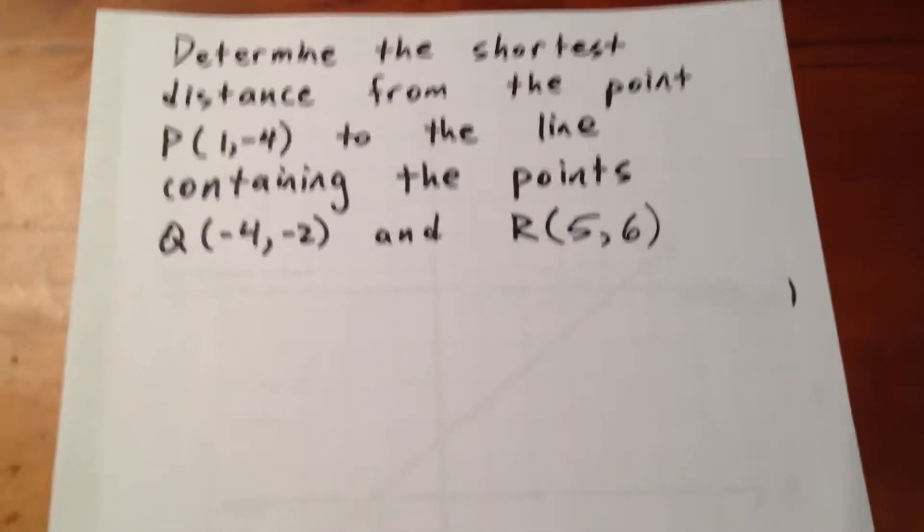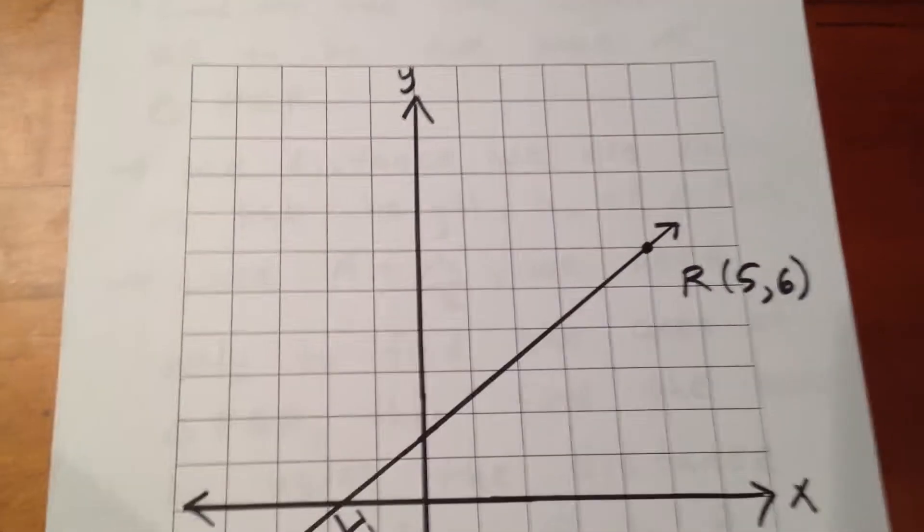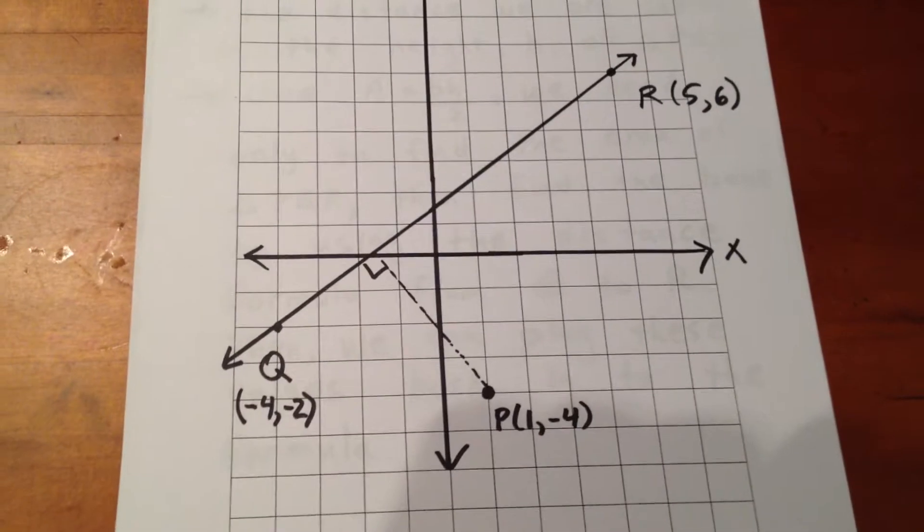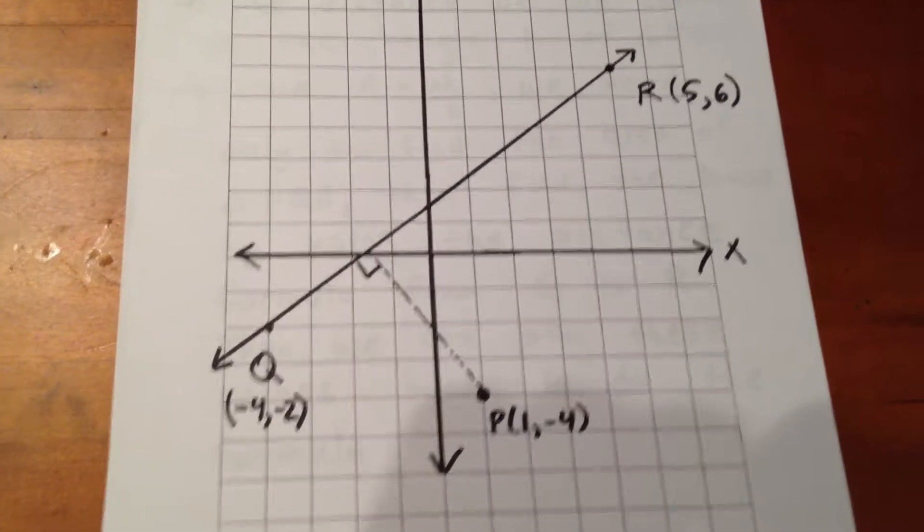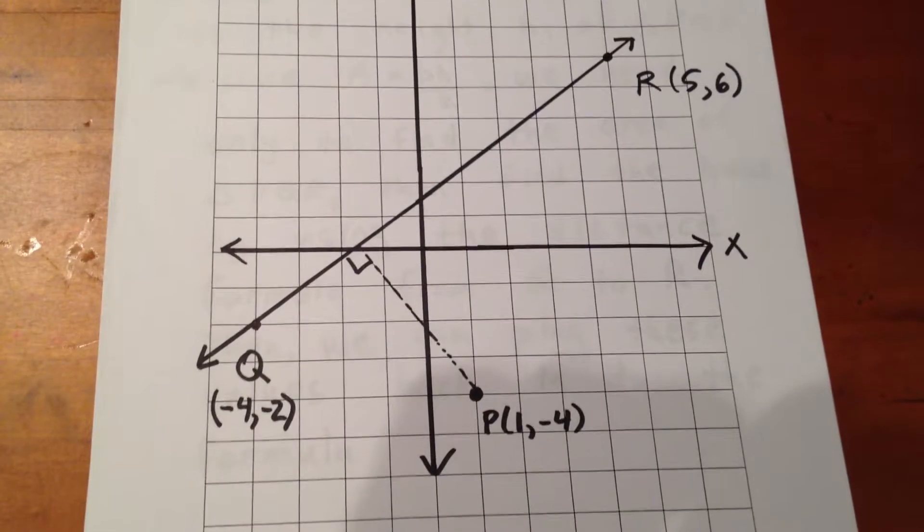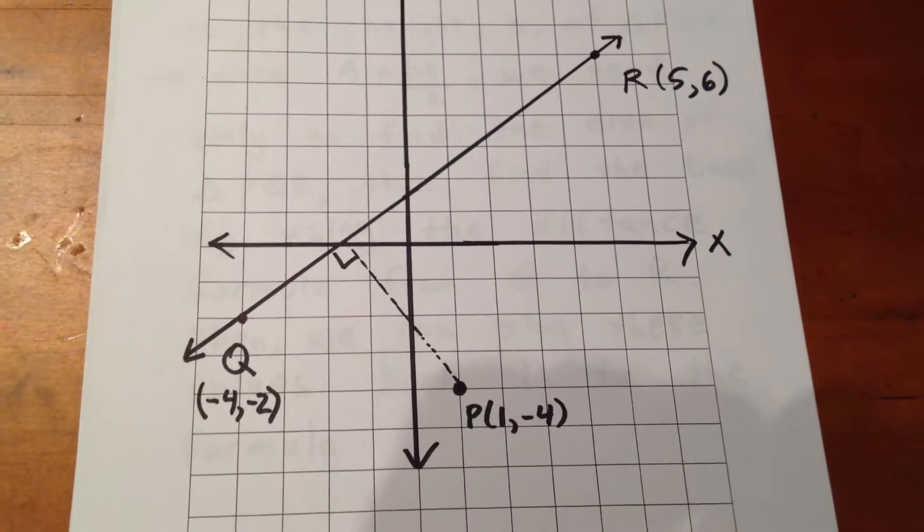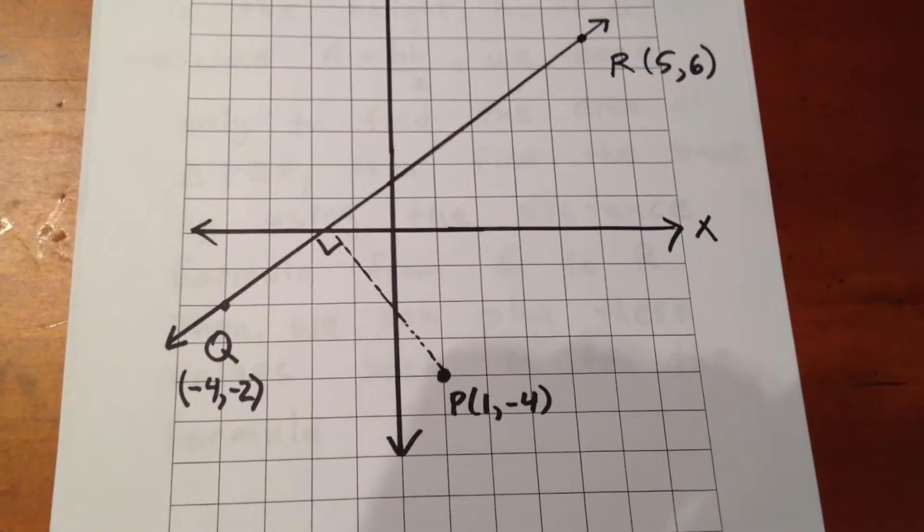All right, well, to get a good idea what this question is asking, we should draw the graph. Q and R are shown, and P is shown as being at 1, negative 4. Now, the shortest distance from P to the line is going to be a perpendicular distance.